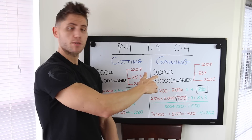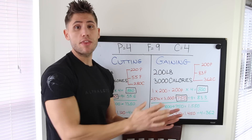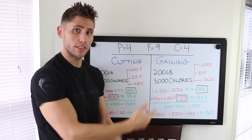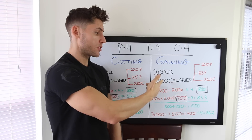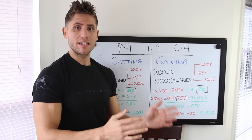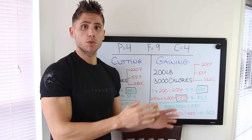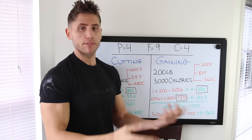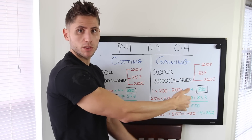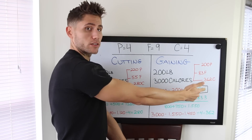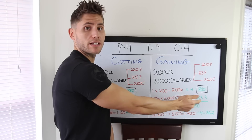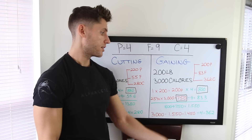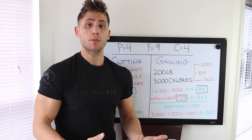For the gaining phase example: someone who's 200 pounds with a gaining target of 3,000 calories per day. We go to the lower end of protein — 1 gram per pound — so 200 pounds equals 200 grams of protein, which is 800 calories. For fat we go to 25 percent of total calories: 25 percent of 3,000 is 750 calories, divided by 9 equals about 83 grams of fat. Adding protein and fat calories: 800 plus 750 equals 1,550. Then 3,000 minus 1,550 equals 1,450, divided by 4 equals 362 grams of carbs.